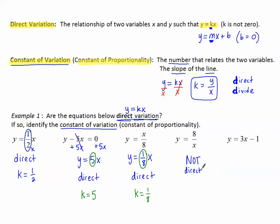How about the last equation? Remember, it's supposed to be y equals a number times x with nothing added or subtracted after. This equation has addition or subtraction, so this one is also not direct variation.